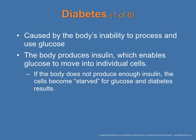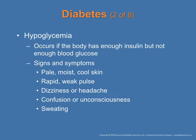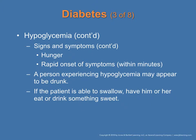Diabetes is caused by the body's inability to process and use glucose. The body produces insulin through the pancreas, which enables glucose to move into individual cells. When you eat, insulin spikes and moves glucose from meals into your cells. If the body does not produce enough insulin, the cells become starved for glucose and diabetes results. Hypoglycemia occurs when the body has enough insulin but not enough blood glucose. Symptoms include pale, moist skin, agitation, confusion, rapid weak pulse, headache, dizziness, hunger, shaking, and rapid onset within minutes. A person experiencing hypoglycemia may appear to be drunk.